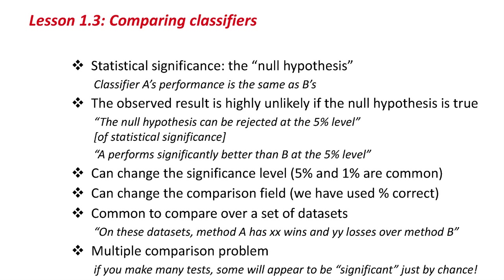We can change the comparison field — we've used percent correct, but we can change that in the Explorer. It's common to compare over a set of datasets; we might say that on these datasets, method A has so many wins and so many losses over method B, referring to the number of statistically significant times that A is better than B or B is better than A. There is a problem you ought to be aware of: the multiple comparison problem. If you make a large number of tests, some of them will appear to be significant just by chance. As usual, this is not an exact science — the interpretation of results requires a certain amount of care.